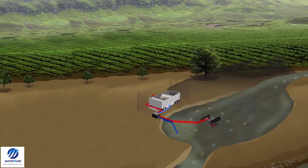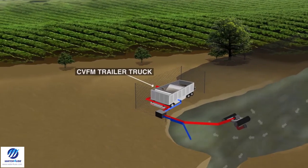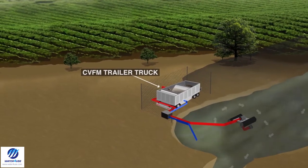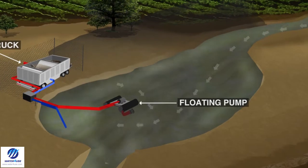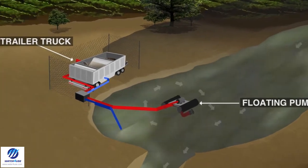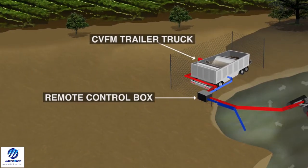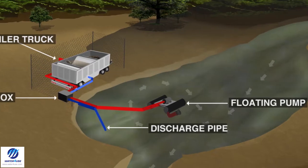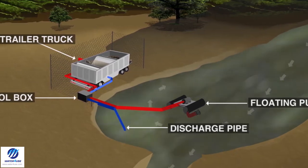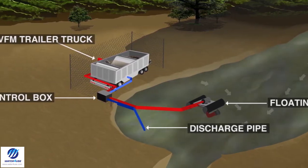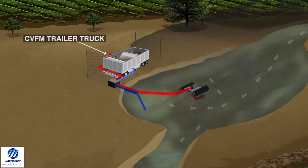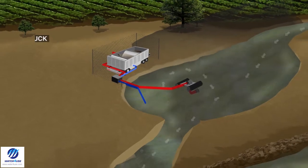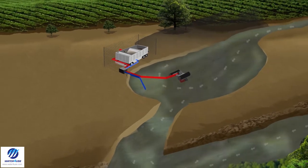The water will be sucked by the vacuum pump and will pass through the RCB box, where it will be analyzed for water contaminants such as nitrate, phosphate, and silts content. The RCB will send and feed the information to the cloud server that tracks and records the data saved on the system.